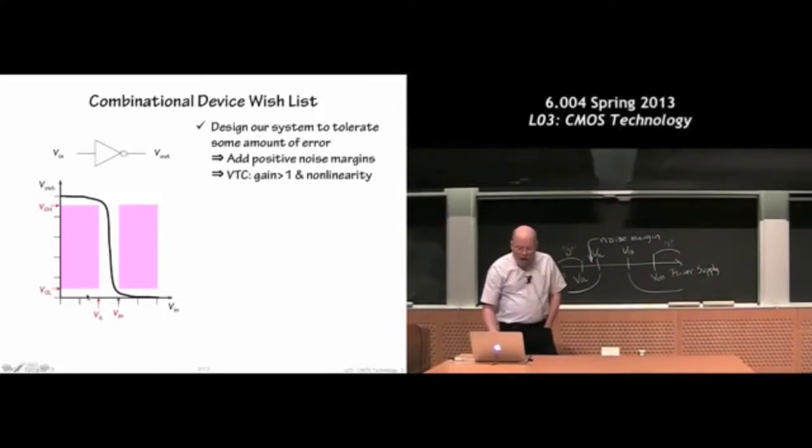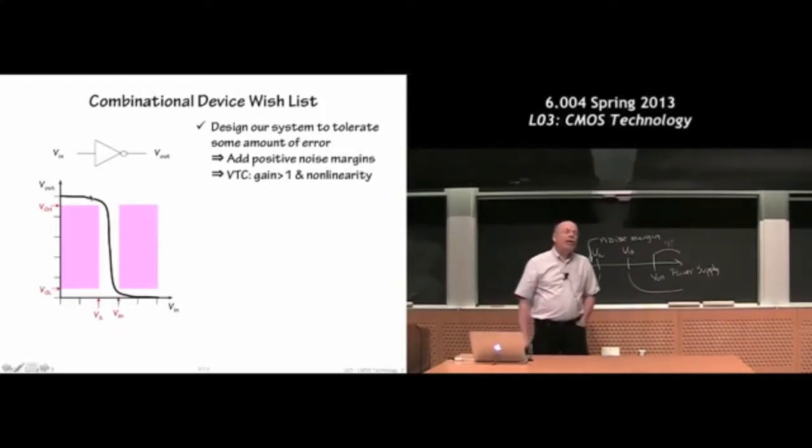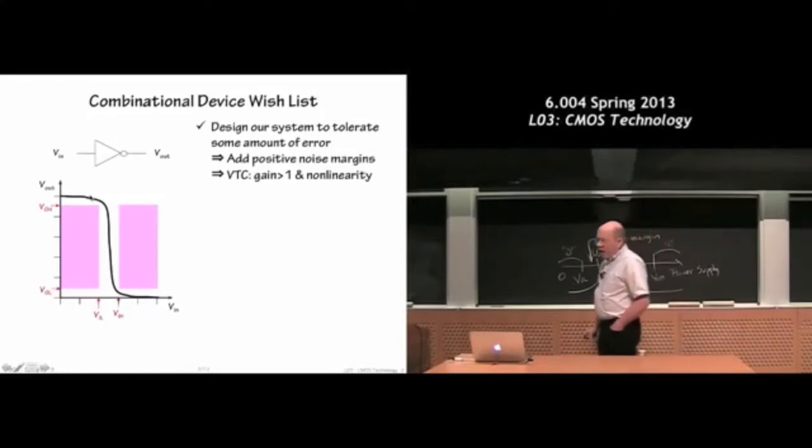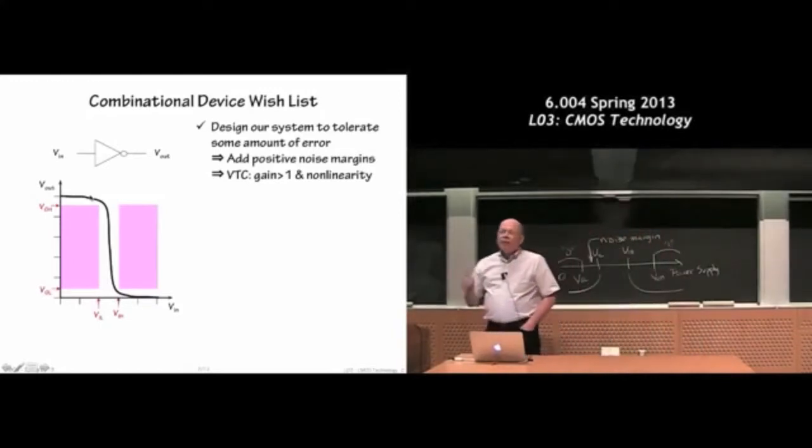Valid in to valid out means we expect the device to produce a voltage less than VOL or greater than VOH. This means any legal combinational device's voltage transfer curve has to go around those two shaded regions, which correspond to valid in but invalid out. We don't ever want our devices to produce an output voltage that falls in one of those shaded regions.